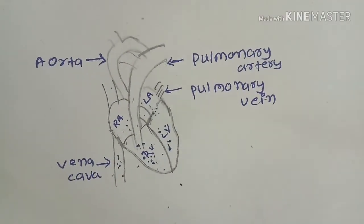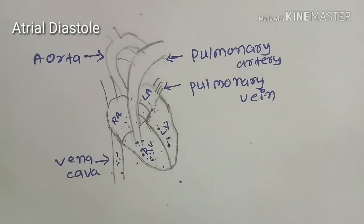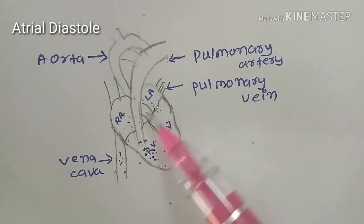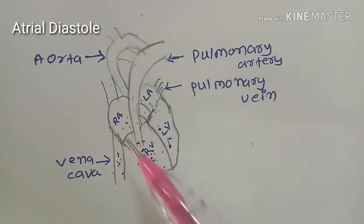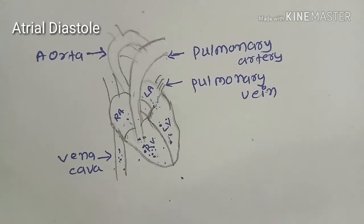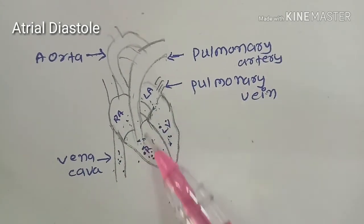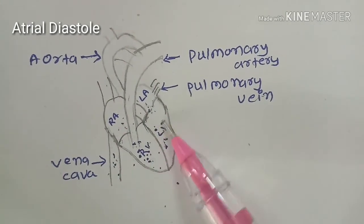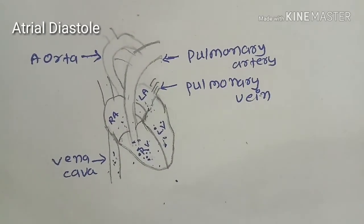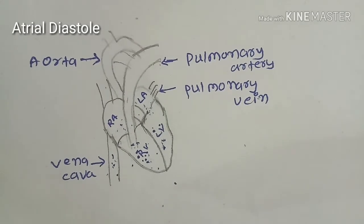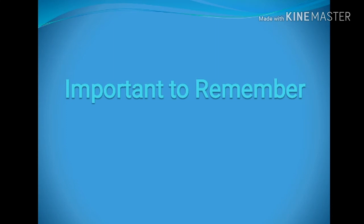Now, atrial diastole. As atrial muscles start relaxing, there will be an increase in atrial pressure due to continuous venous return. It decreases when the AV valve opens and blood moves from the atria towards the ventricles, and again starts rising during the phase of diastasis of ventricular relaxation.